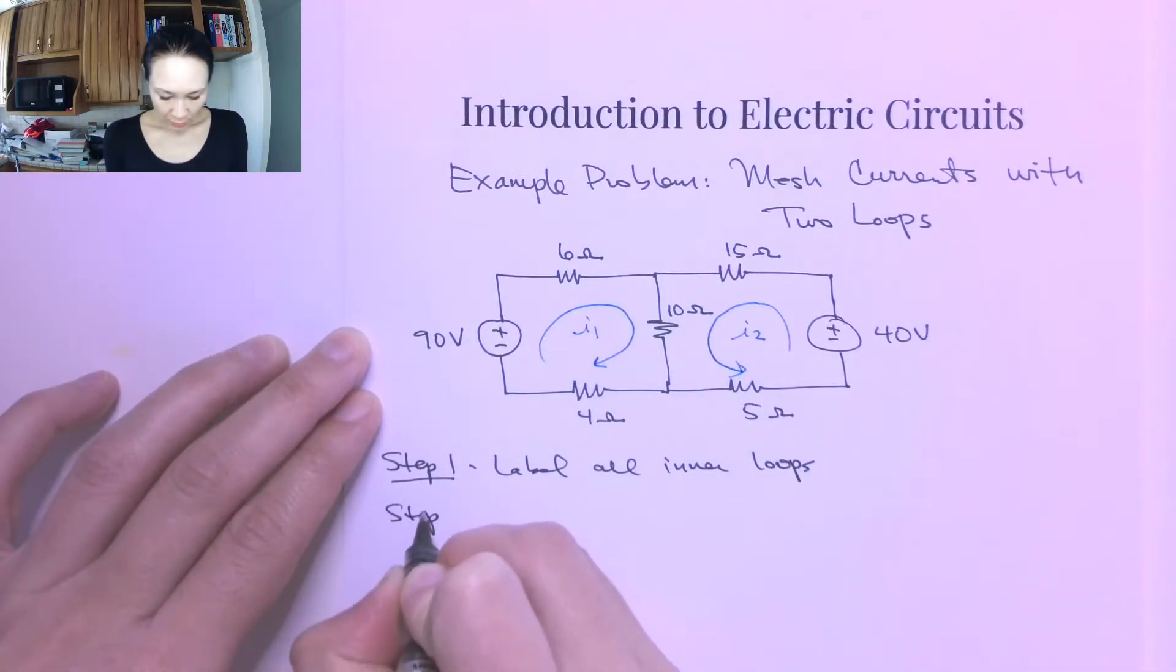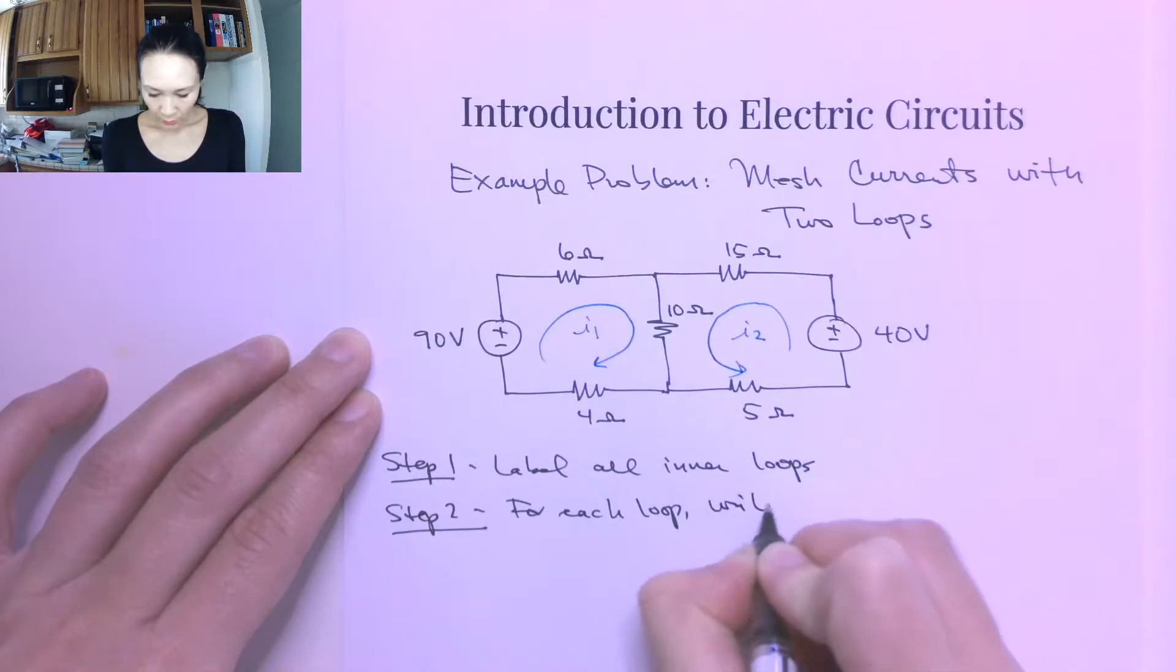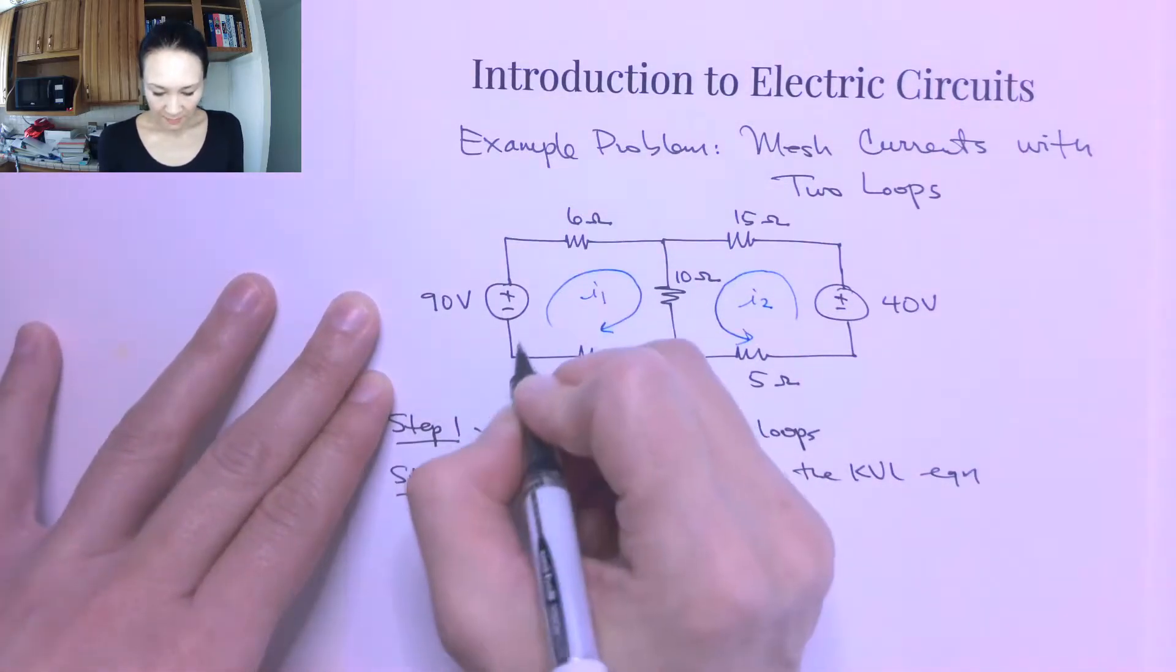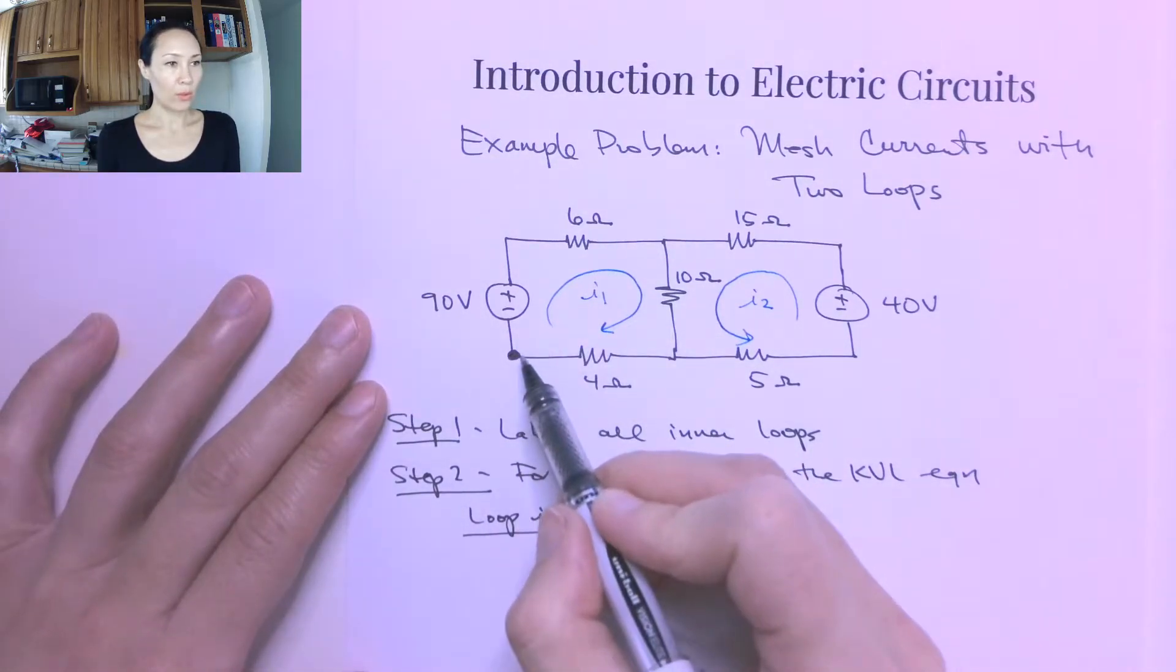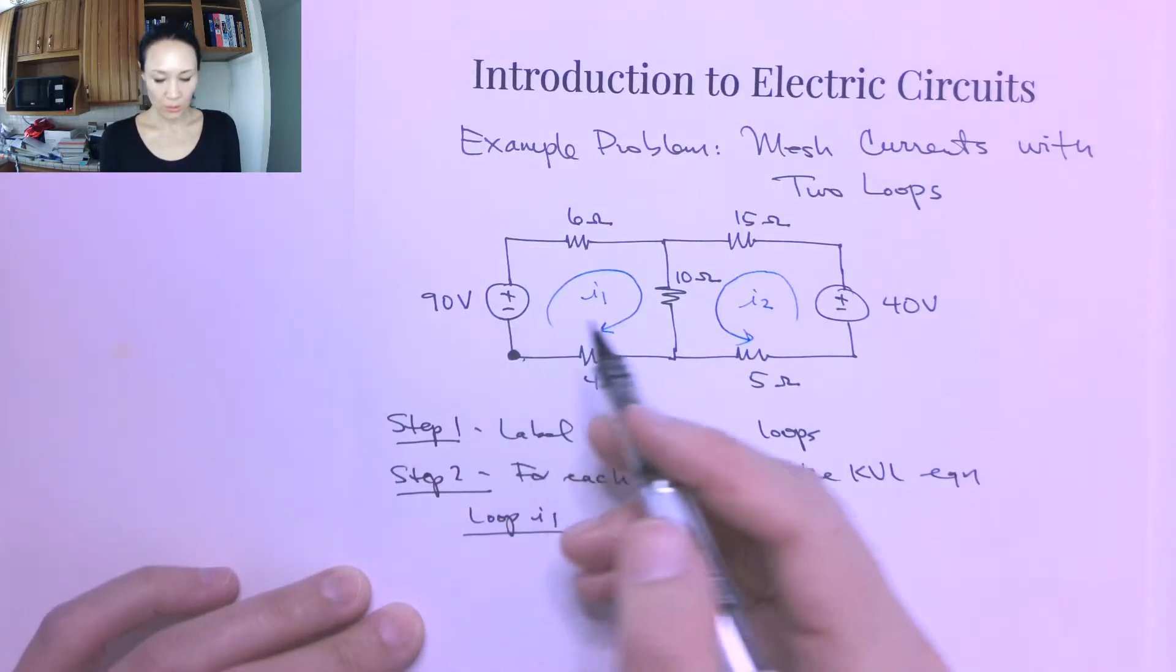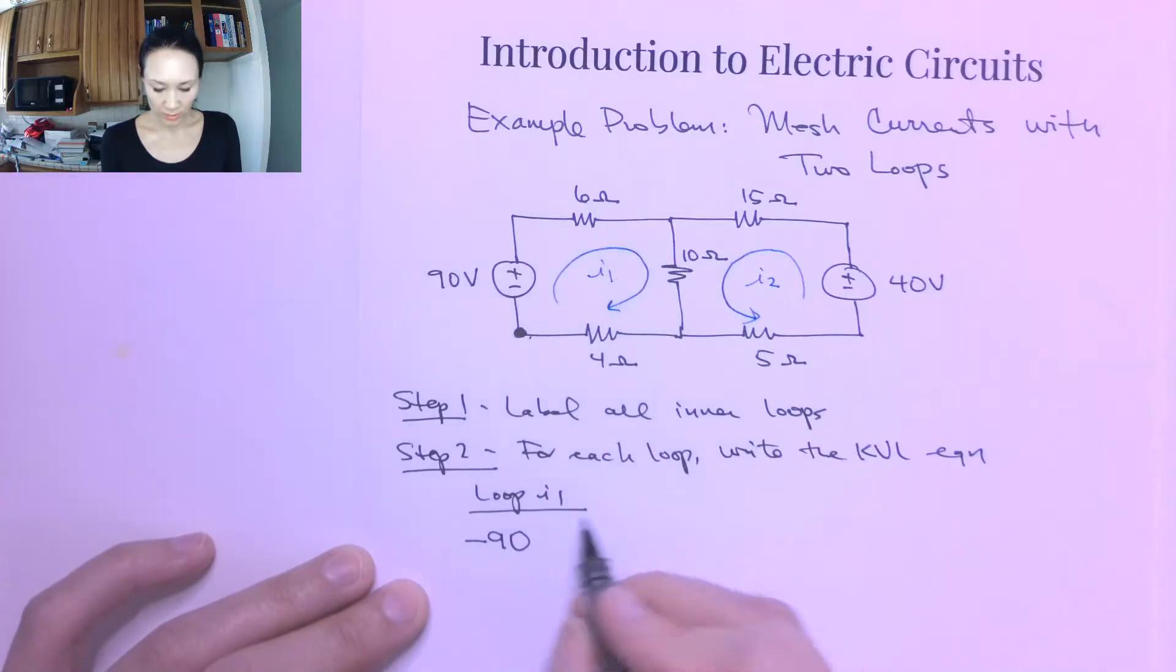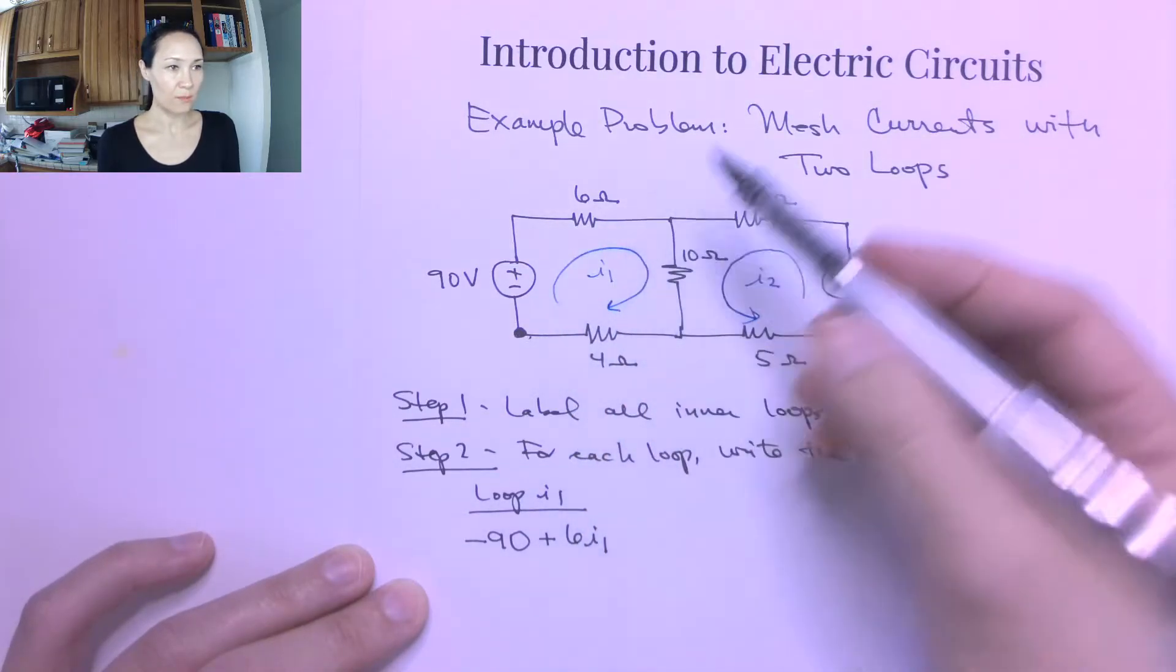Now for step number two, for each loop, I'm going to write the KVL equation. Okay, so KVL tells us that the sum of voltages around any loop is equal to zero. So my loop equations are going to be, for I1, so at loop I1, if I start at this bottom corner, and I'm going to walk around the direction of this I1 loop, using the passive sign convention, when I enter in the negative terminal of this voltage source, this is going to be a negative 90 in my equation. So then as I continue around this loop, the next circuit element I encounter is the 6 ohm resistor. So this will be plus 6 times I1, because I1 is the only current that touches that 6 ohm resistor.